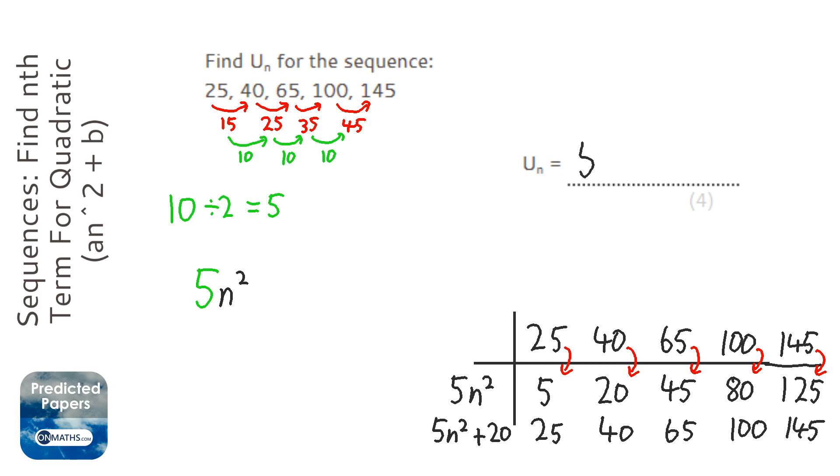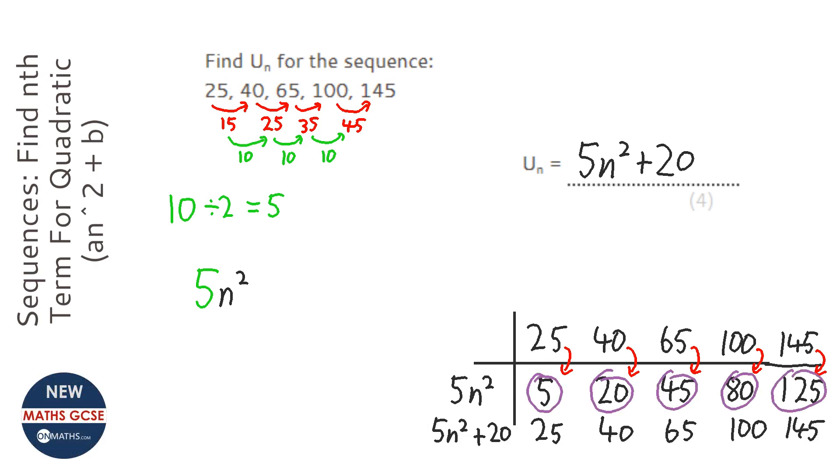So our sequence will be 5n² + 20. Now, we've got to be a little bit careful, because there is a more complicated form of a quadratic where you can't just add an amount to each of these to get the quadratic. So this is quite a nice one, the fact that we can just add 20. On the more difficult ones, you need to find the nth term of this linear sequence.